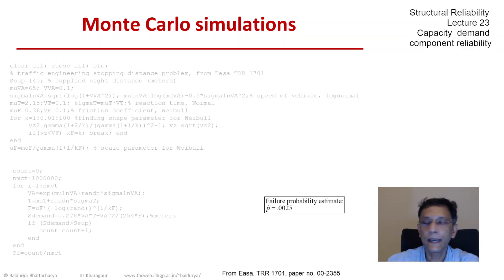And we can estimate PF as the average of the indicator functions: count divided by NMCT. And the answer that we get from this exercise—I ran the code—the estimated PF is about 0.0025, which is small enough probably.